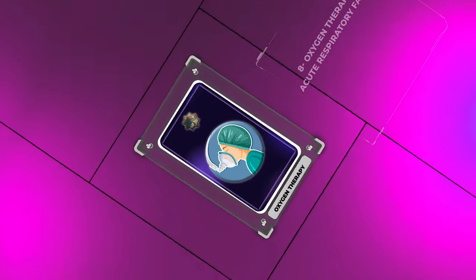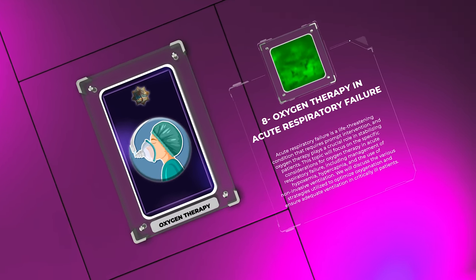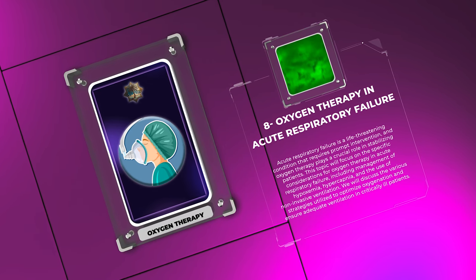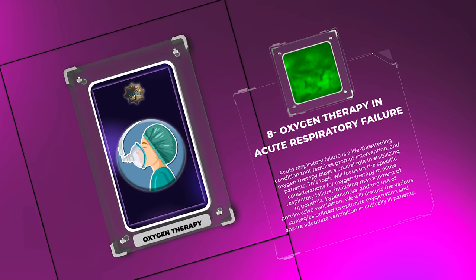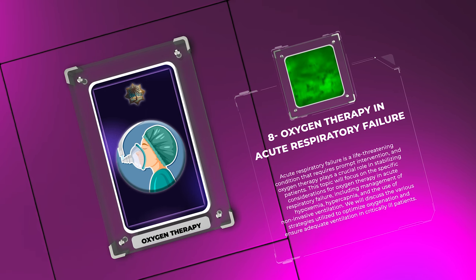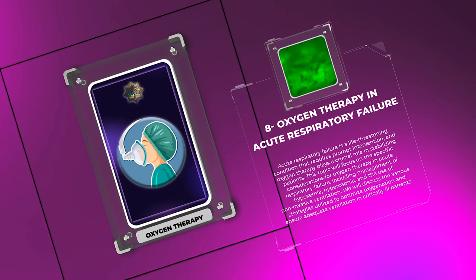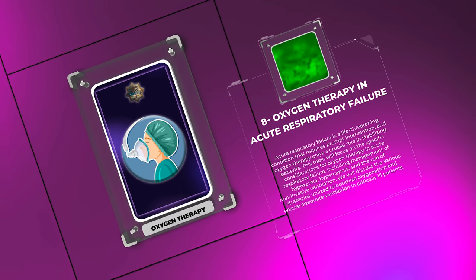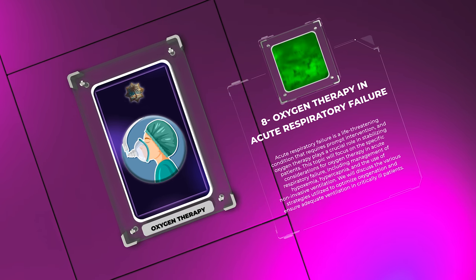Acute respiratory failure is a life-threatening condition that requires prompt intervention, and oxygen therapy plays a crucial role in stabilizing patients. This topic will focus on the specific considerations for oxygen therapy in acute respiratory failure, including management of hypoxemia, hypercapnia, and the use of non-invasive ventilation, as well as various strategies to optimize oxygenation and ensure adequate ventilation in critically ill patients.